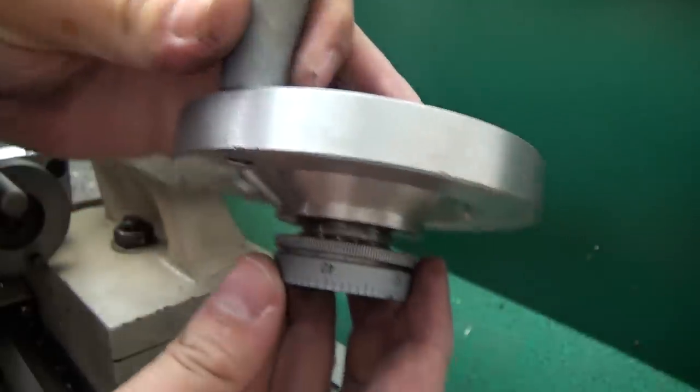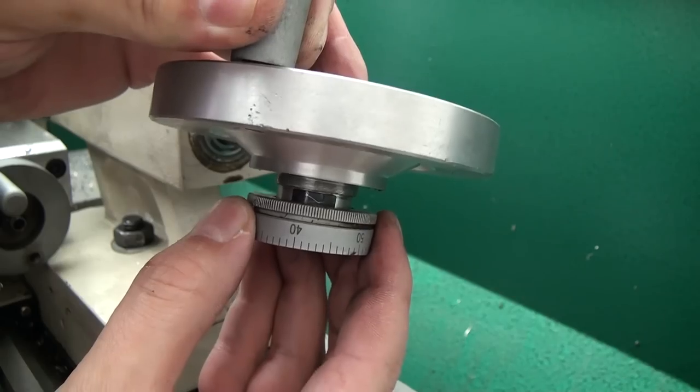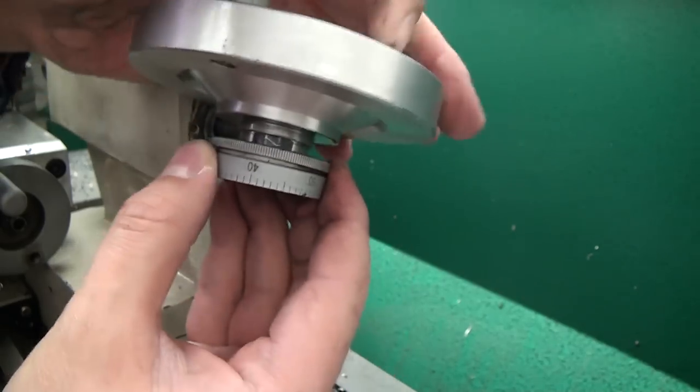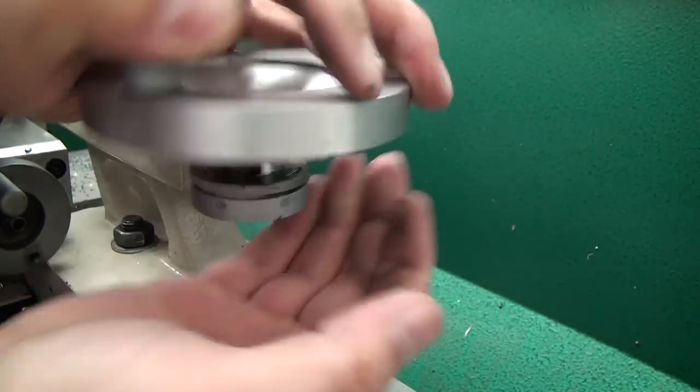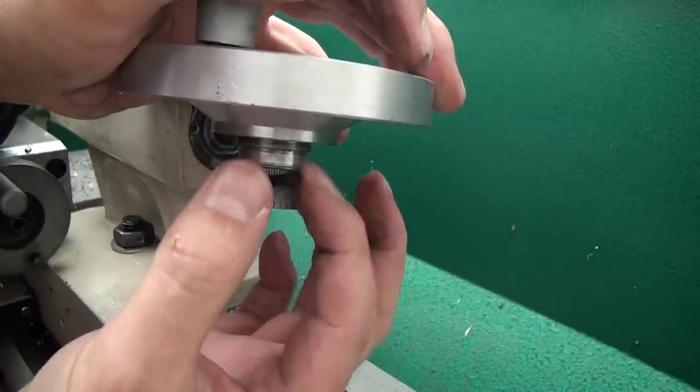There's this dial on the back of the hand wheel and it pulls off pretty easily. You'll want to make sure that you don't lose this flat spring that's underneath it. The only reason I took mine apart is because it didn't turn smoothly at all and it felt a little bit tight.